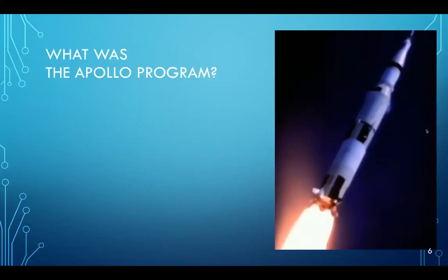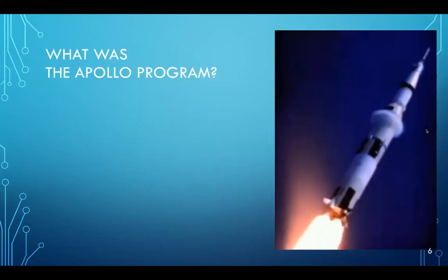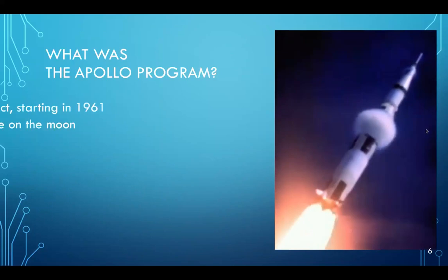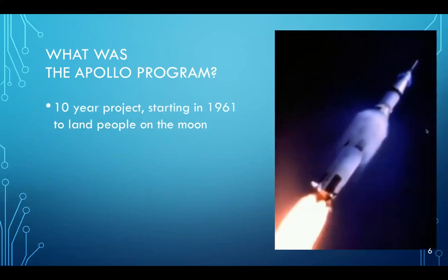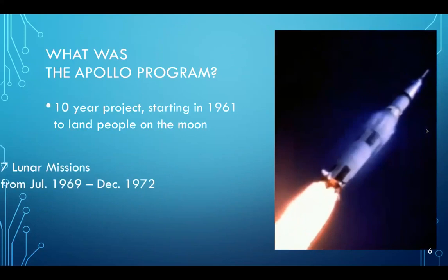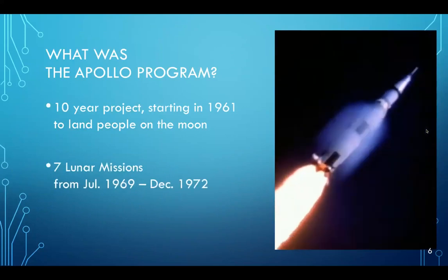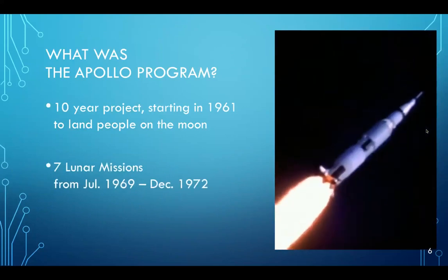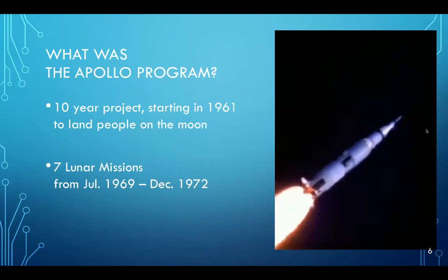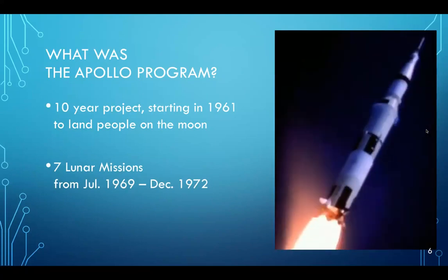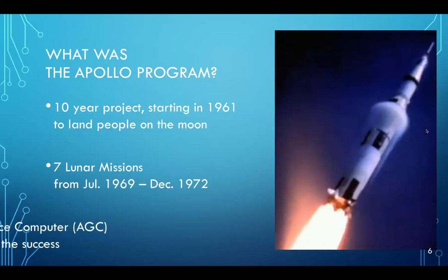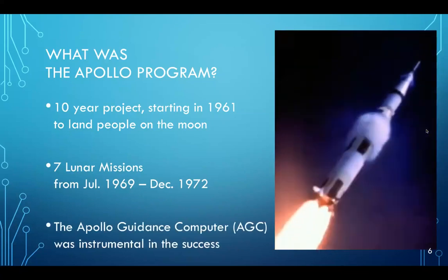So let's get started talking about the background. So what was the Apollo program? For those that may not be too familiar with it, it was a 10-year effort to land people on the moon starting in 1961. There were seven lunar missions between July 69 and 72. One of those missions didn't actually succeed in landing. That was Apollo 13, but the other six did. And the Apollo Guidance Computer was instrumental in the success of these missions.